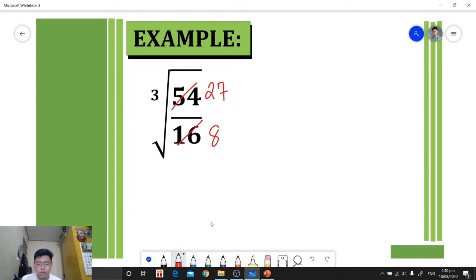After that, we're going to rewrite this into this form: the cube root of 27 over 8. To simplify this, we need to get the cube root of the numerator and the cube root of the denominator. Cube root of 27 is 3, the cube root of 8 is 2, and our final answer will be 3 over 2.